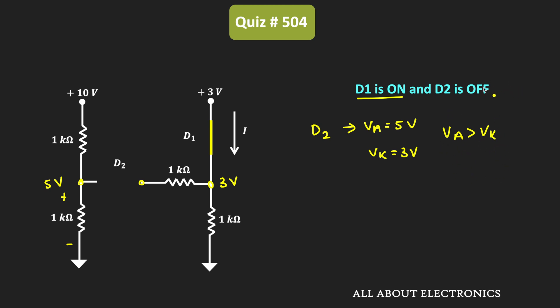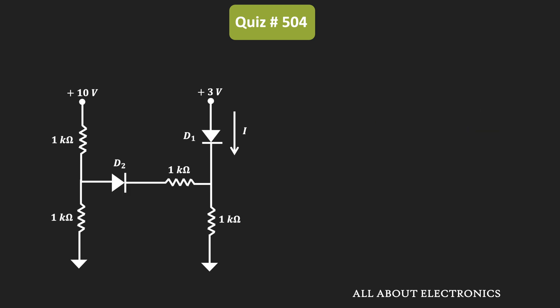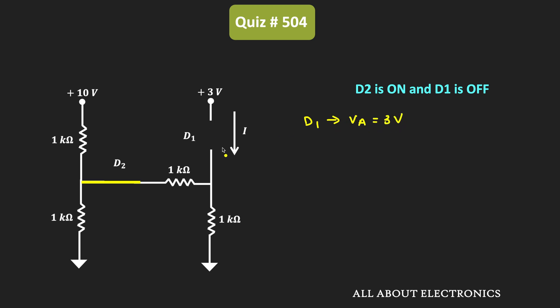Therefore, the condition where D1 is ON and D2 is OFF is also not true. Now let us consider the condition where diode D2 is ON and diode D1 is OFF, and verify whether this condition is true. If D2 is ON it acts as a short circuit, while D1 acts as an open circuit. The anode voltage of D1 is equal to 3V. We need to find the voltage at the cathode — let us call it Vx — and the voltage at this node, Vy.